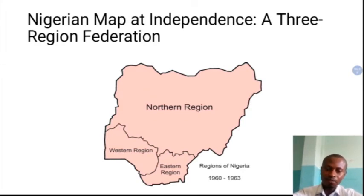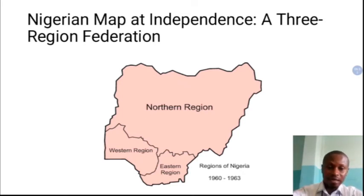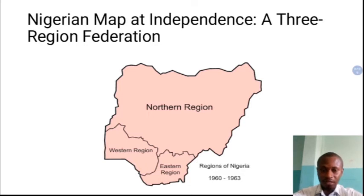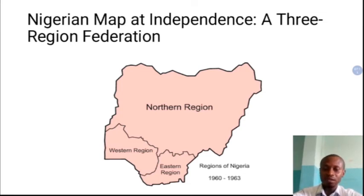Looking at this map, it shows Nigeria at independence as a three-region federation — the northern region, the western region, and the eastern region. The federation maintained this structure until 1963, when a new constitution was adopted and a new region was created, called the Midwest region. This is the federal structure of Nigeria at independence.